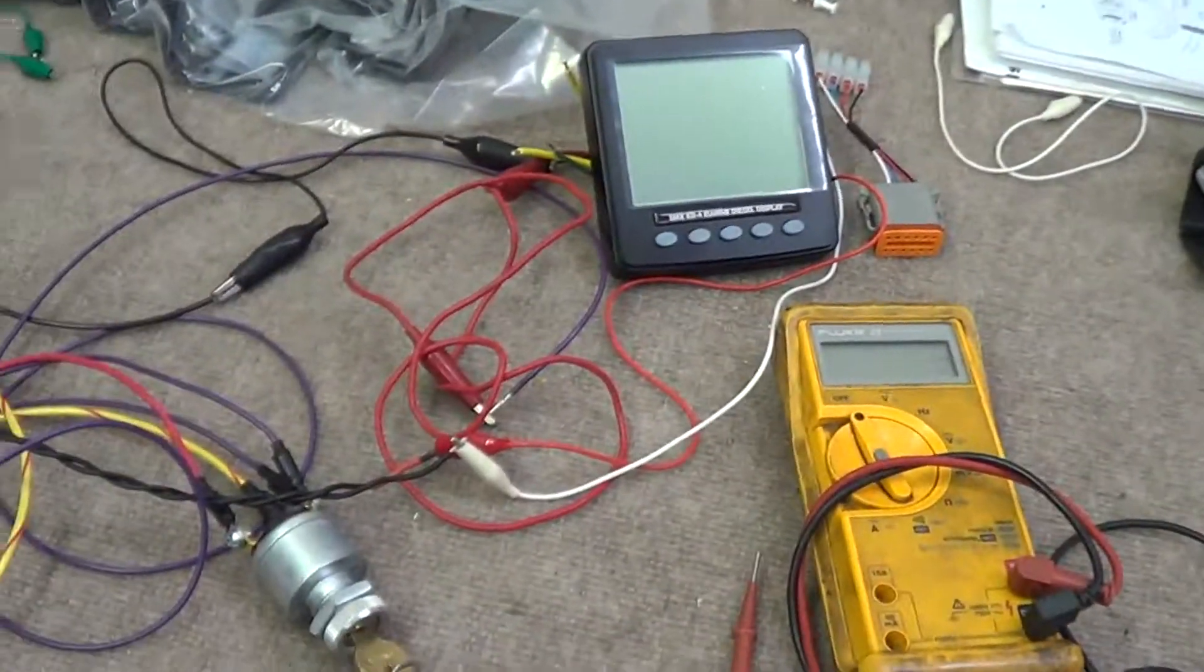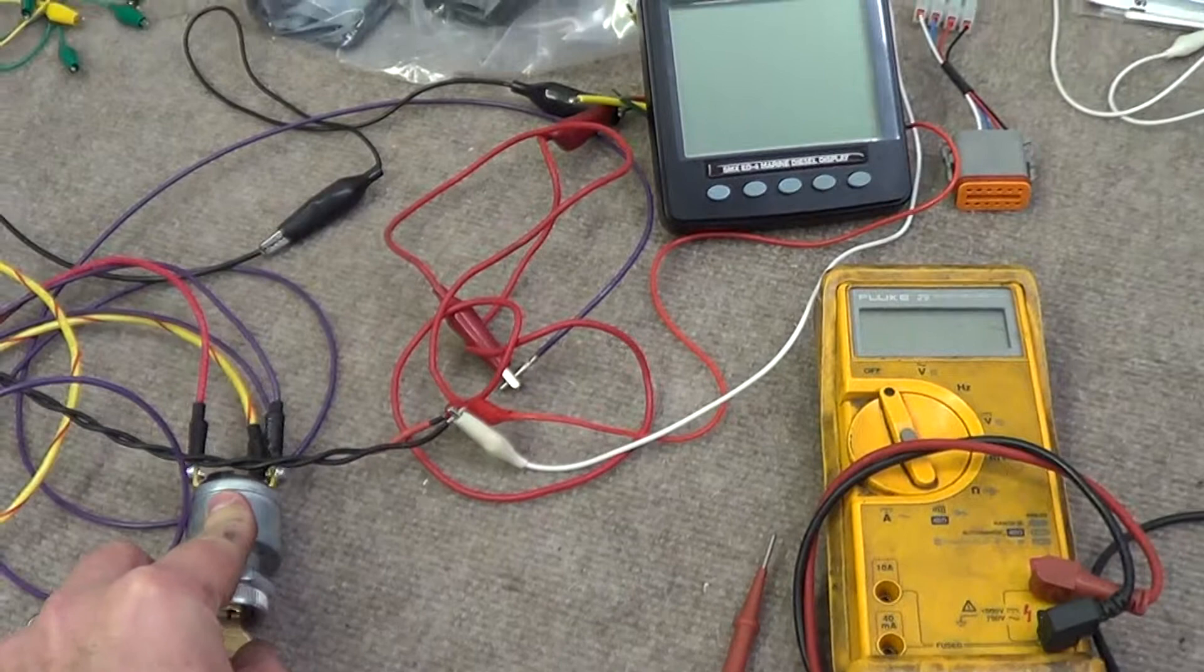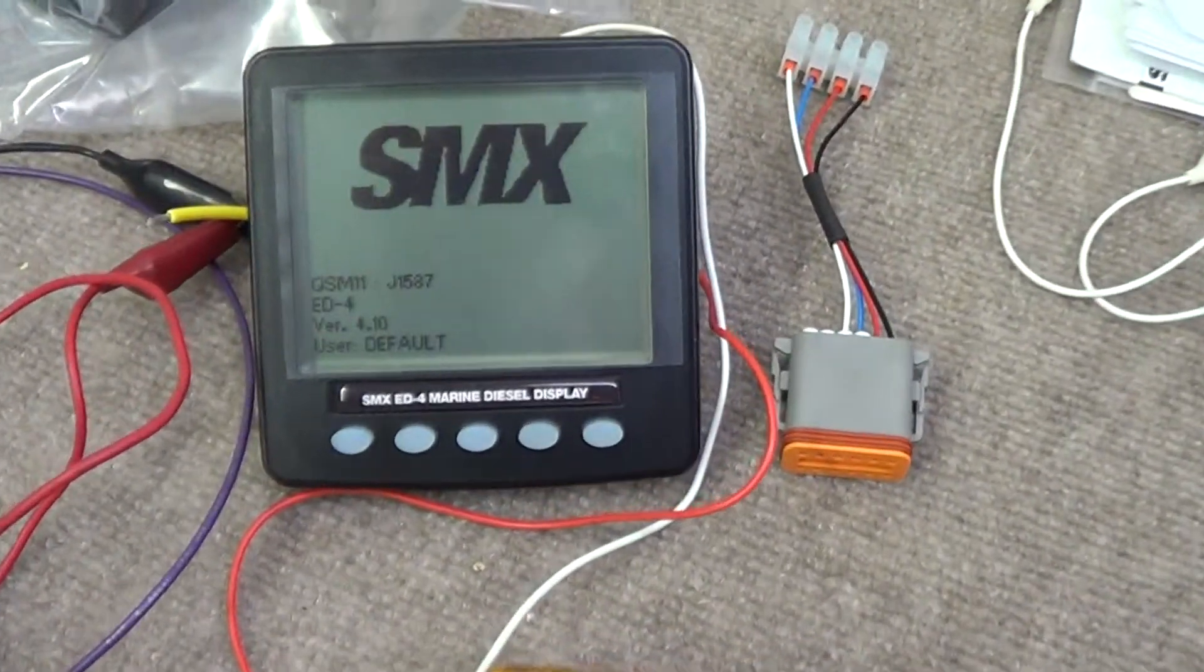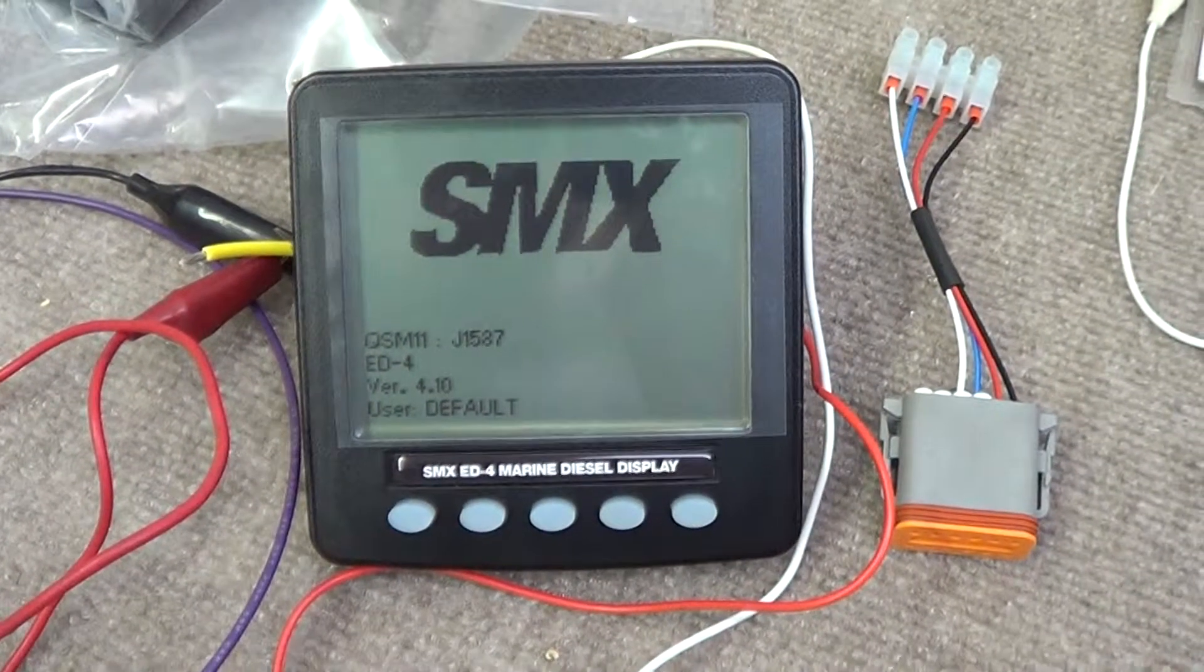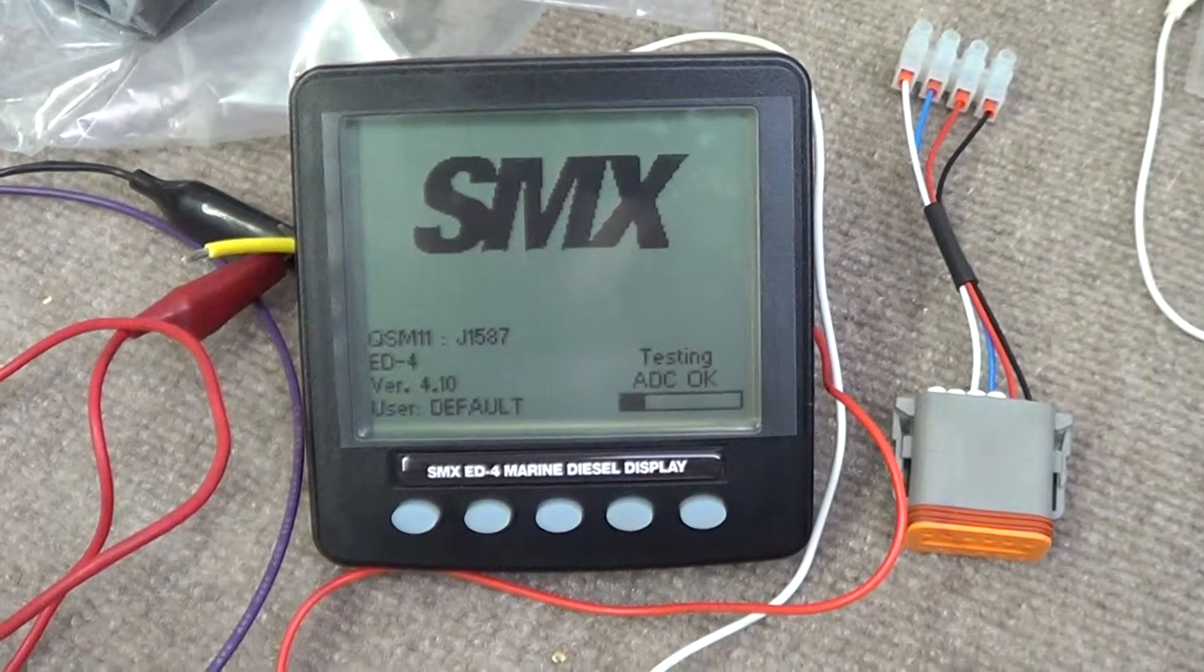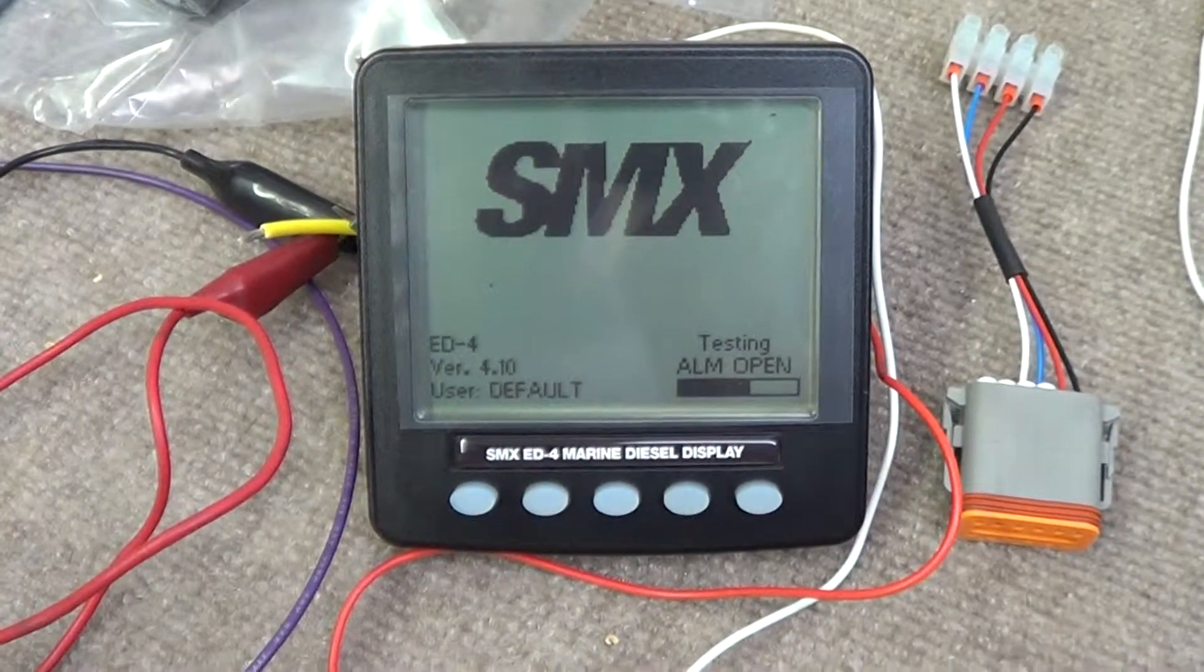So we'll go ahead and turn on the key switch here and we'll put power to the brain and power to the display. Here's our display. You can see it just powered up. It's going through its test to make sure everything is where it's supposed to be.